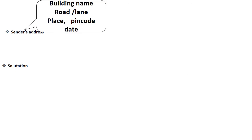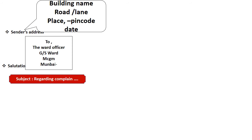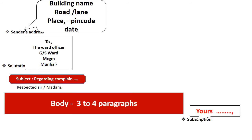The sender's address is the same — building name, road, lane, place, PIN code — and the date. But here you also write the addressee: for example, 'To the Ward Officer, G South Ward, MCJM Mumbai' with PIN code. This is very important — to whom you are writing. After this, you need to write down the subject — regarding what: it can be a complaint, asking permission, or a reply. Then 'Respected Sir/Madam' because it is a formal letter. After this, write the body in three to four paragraphs, followed by subscription and your name. Everything on the left margin.